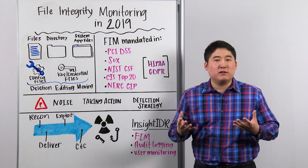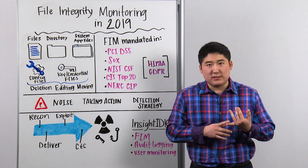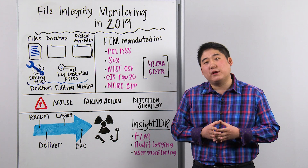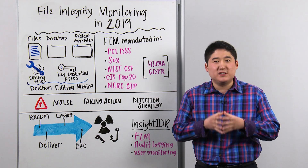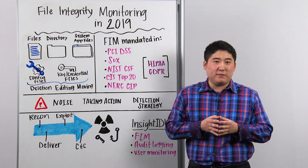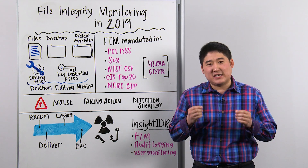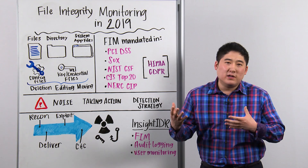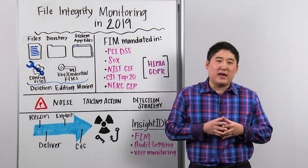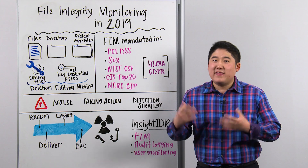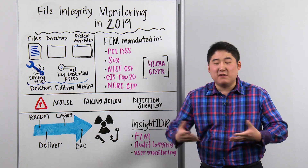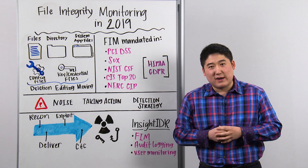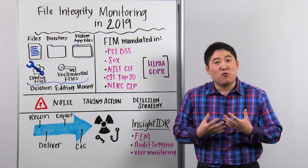FIM isn't a particularly new technology, so if you're looking at deploying in 2019, here are a couple of cautions to be aware of. The first is that classic noise challenge. It's really important to be very prescriptive and precise on exactly what you're going to put under monitoring. If you're a little too broad and do something like monitor Windows System32, that could easily create a deluge of alerts when everything in those parent or subdirectories gets edited or modified.